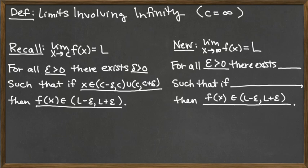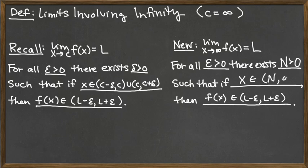The thing that changes is that c — our particular x-value of interest — is going off to infinity. So instead of talking about a small x-distance away from c, we're talking about being close enough to infinity on the x-axis. We introduce some large x-value N, understanding N to be a large x-value. We say: there exists a capital N greater than zero such that if x is in (N, infinity), then our f of x is as close to L as we are prescribing. That's how we change the formal definition.